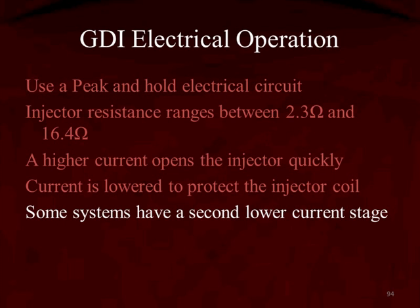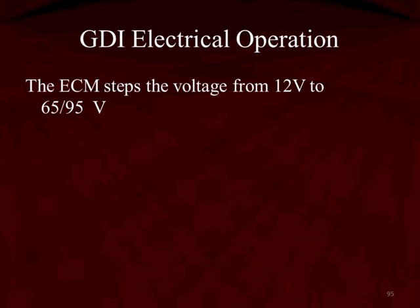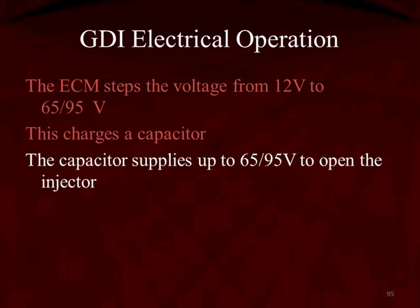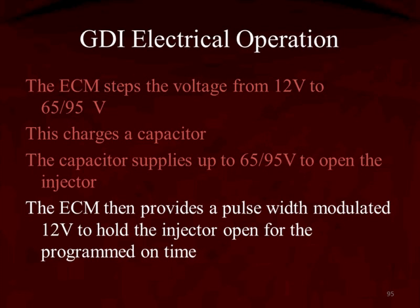On some manufacturers, there is a second lower current stage. The ECM — the PCM, the computer — is going to step the voltage from the B-plus or 12 volts up to the 65 or 95 volts required to operate the injector. This charges a capacitor. The voltage that comes from the capacitor is used to fire the injector — it's more controllable and smoother coming out of the capacitor. The capacitor supplies the 65 to 95 volts that open the injectors, and the computer then provides a pulse-width modulated 12-volt signal to hold the injector open for the programmed amount of time.